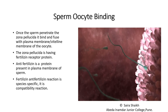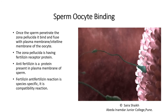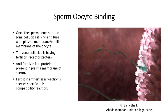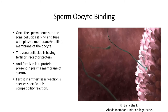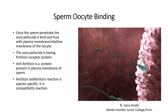The zona pellucida has a protein which acts as a receptor — these are the fertilizin. On the surface of the sperm, they also have plasma membrane proteins called anti-fertilizin. While binding, the reaction takes place between fertilizin and the anti-fertilizin protein receptors. This reaction is species-specific, meaning this protein code is fixed for a particular species. So the sperm of one species will not be able to bind with the egg or the oocyte of another species, and that is why the process is also termed a compatibility process.